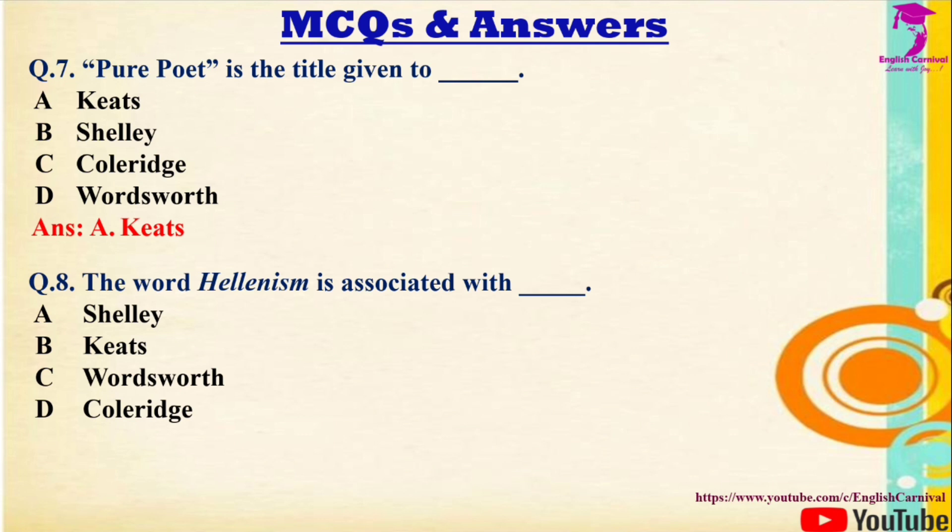Question 8: The word 'Hellenism' is associated with — Options: A) Shelley, B) Keats, C) Wordsworth, D) Coleridge. Correct answer is B — Keats.